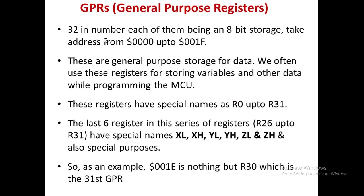Regarding the GPR, the last 6 registers — R26 to R31 — are known as XL, XH, YL, YH, ZL, and ZH. They are used for special functions.